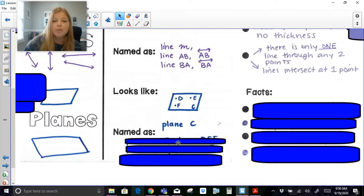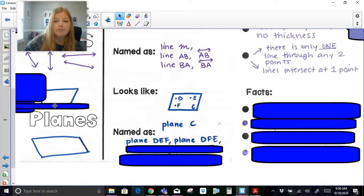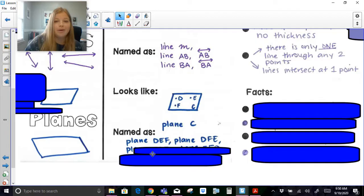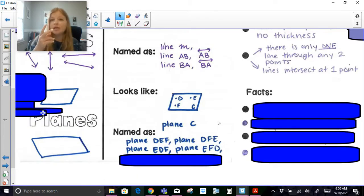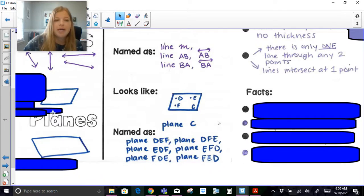I can call this plane by the little letter that's in the corner, so I can call this plane C. Or if I want to name it using those points, I can call it plane D, E, F, or plane D, F, E. I can call it plane E, D, F, or E, F, D. I can use any order change, any permutation of those three letters to name my plane. So I actually could name this plane seven different ways.